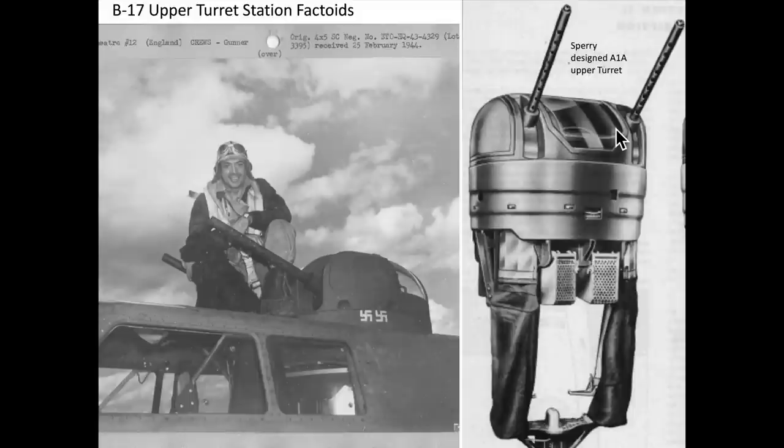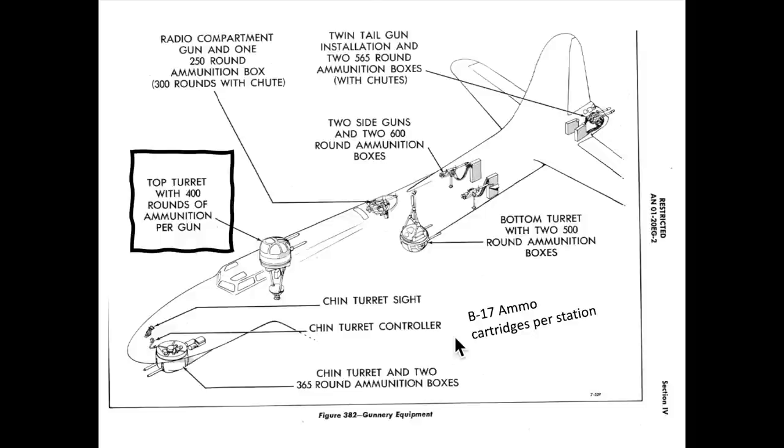If power failure occurs, the gunner can crank the guns into the desired position. This chart outlines the B-17's ammo capacity at each gun station. The upper turret stations carry 400 rounds per gun.